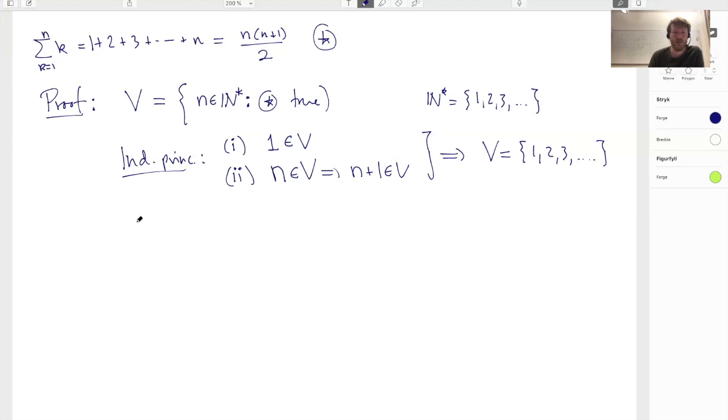So how do I do this? Well, we check one. So is one in V? Well, is this formula star true for one? So the sum here will then start at one and end at one, meaning I'm just taking the first guy here. So that's my left hand side. And then the question is, is it equal to this expression when I replace n by one? Well, let's do that. And this thing here is one times two divided by two, which is one. So yes, this formula here is true when n is equal to one.